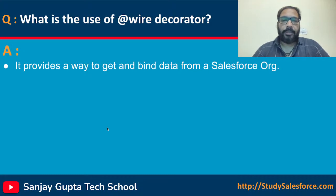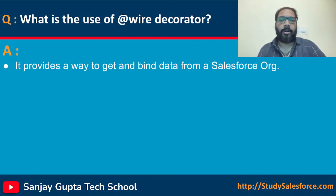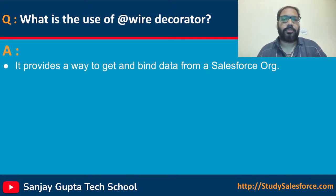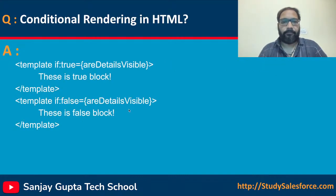The third decorator is @wire. Basically, if you want to bind your Lightning Web Component with your org — like you want to receive some data or send some data — you can use the @wire decorator.